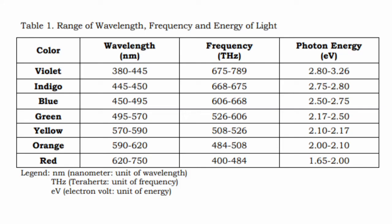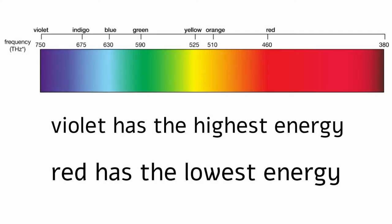Wave frequency is related to wave energy. The more energy in the wave, the higher its frequency. The lower the frequency is, the less energy in the wave. When it comes to light waves, violet has the highest energy while red has the lowest energy.